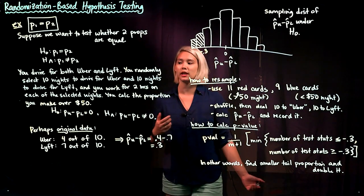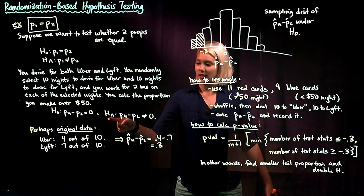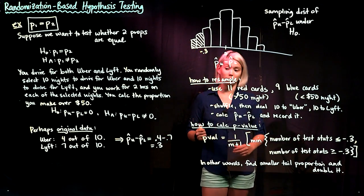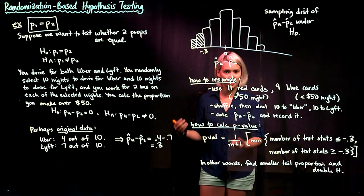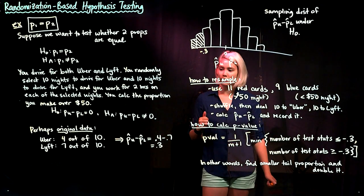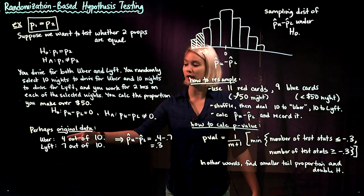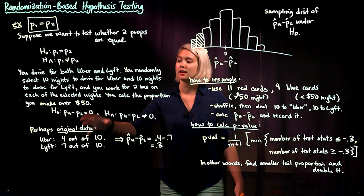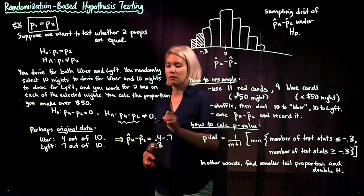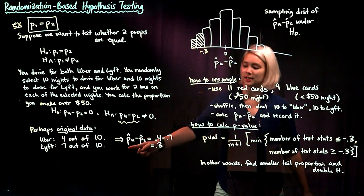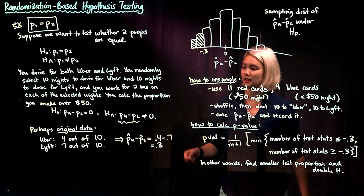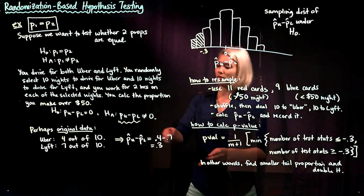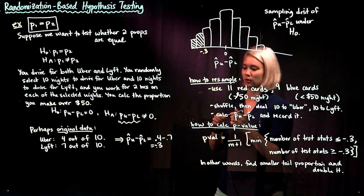P is the proportion of nights you make over $50. The alternative hypothesis is there is a difference: P Uber minus P Lyft is not equal to zero. So with our original data, four out of 10 nights you made over $50 for Uber, and seven out of 10 nights for Lyft. That gives us P Uber hat minus P Lyft hat equals 0.4 minus 0.7, or negative 0.3.